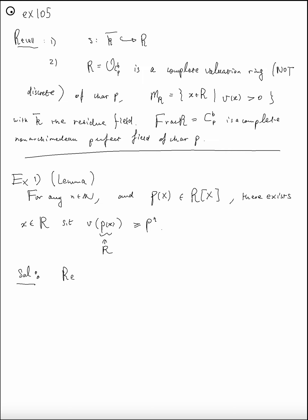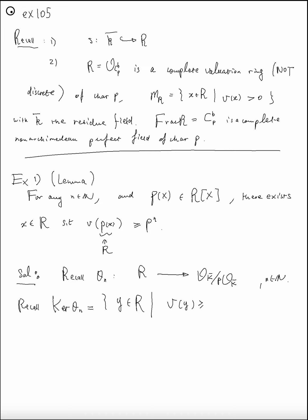We're going to use the map zeta_n from R to k-bar/(p·O_{k-bar}), generated by p. This map exists for any natural number n. Recall also from the previous exercises, we proved that the kernel of zeta_n can be described as elements of R whose valuation is bigger than p to the power n. We used this to show that the inverse-limit topology and the valuation topology are the same on R.